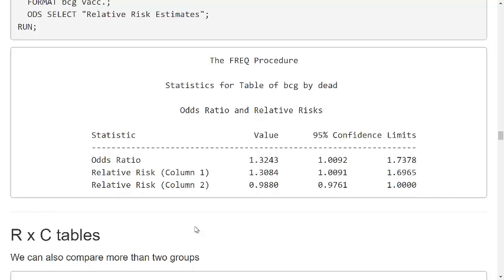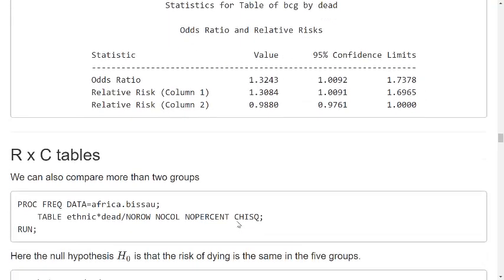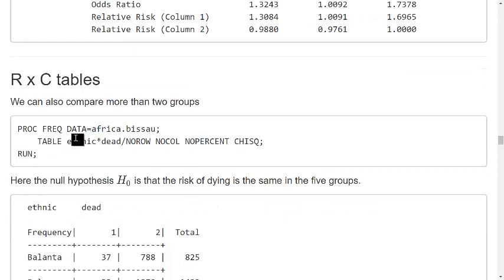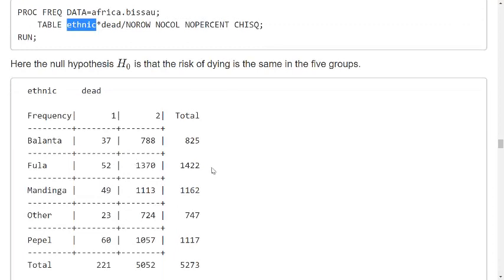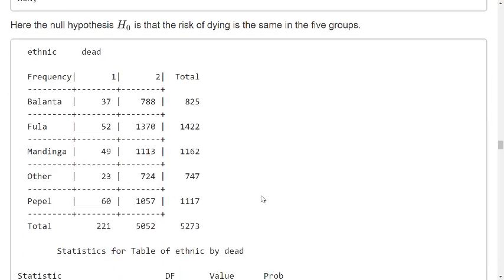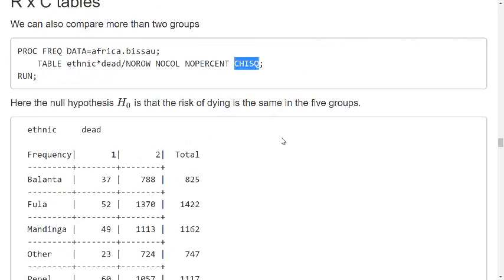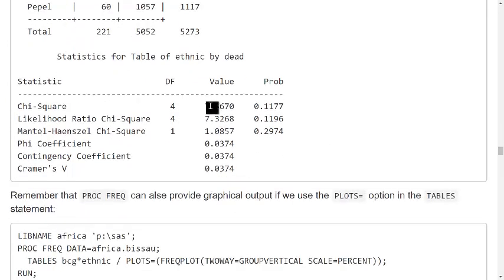What about ANOVA? Here, what if we have more than two groups? If I have five groups and I do here because the ethnic variable has five levels, then the null hypothesis that the risk of dying is in the same group. I can look at the table and I can calculate a chi-square statistic in exactly the same way. I get a chi-square value here.